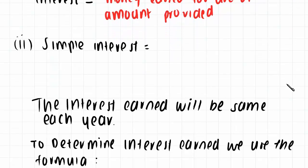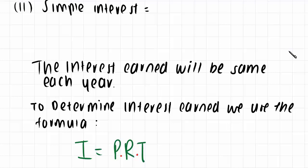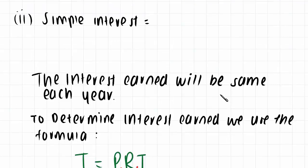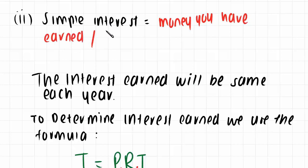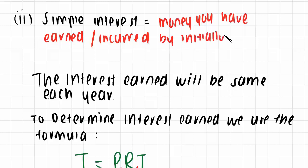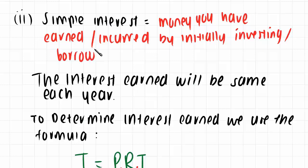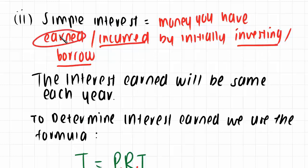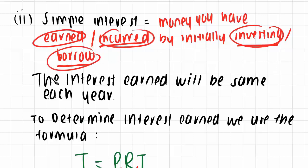Simple interest is very easy, just like the name says. It is the money earned or incurred — earned if you are the lender, incurred if you are the borrower, because you have to pay interest to the lender. When you invest you earn interest, and when you borrow you incur interest — you have to pay interest on top of the principal amount.